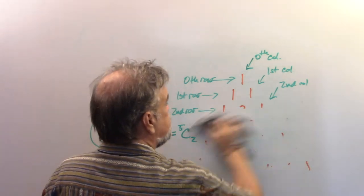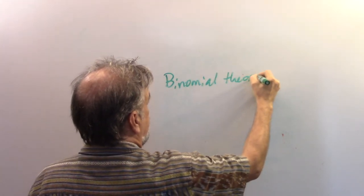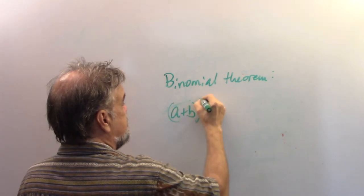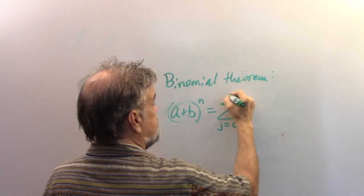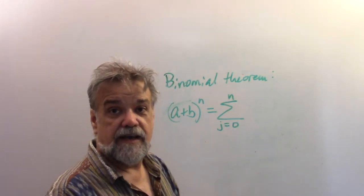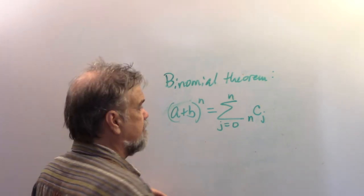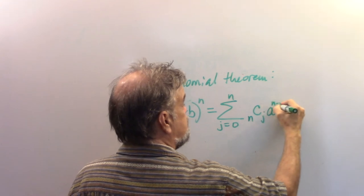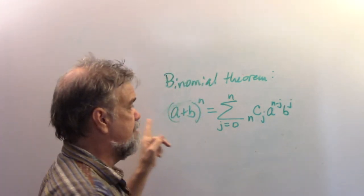This all leads to the binomial theorem, which states that (a + b) to the nth power is the sum, as j goes from 0 to n, of terms of the form (n choose j) times a to the (n minus j) power times b to the j power. A always starts at the nth power and steps down, while b steps up.